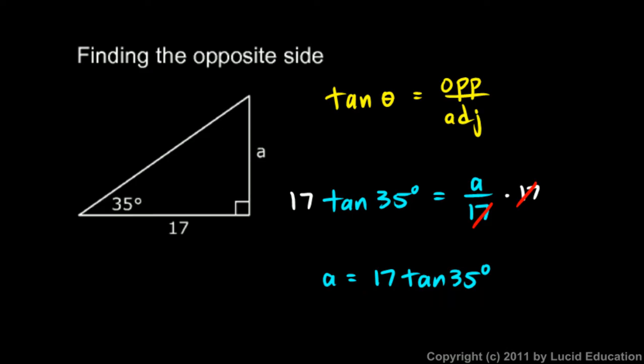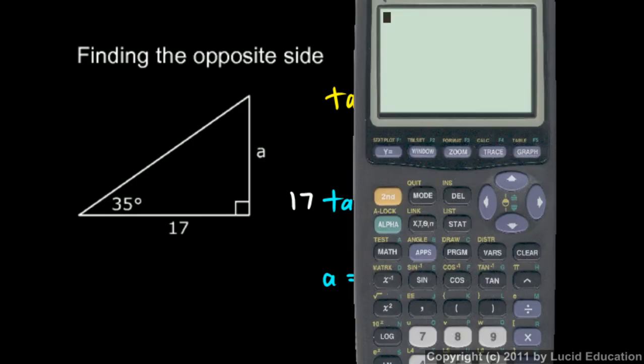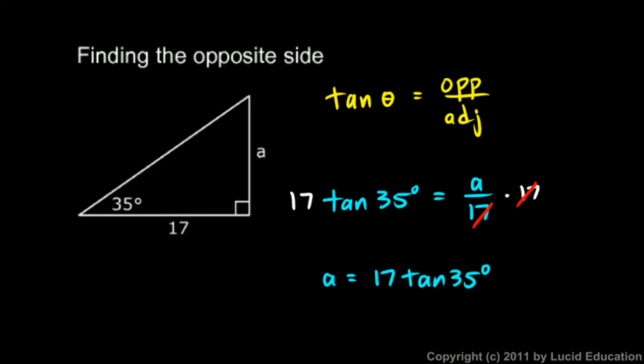You can do this on the calculator, because the calculator can give you a value for the tangent of 35 degrees. Pull up the calculator and type 17 times the tangent of 35. The answer is 11.9. If this length is 17, it's a right triangle, and that angle is 35 degrees, then this side has to be 11.9.